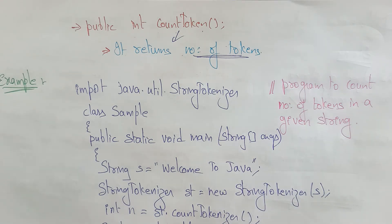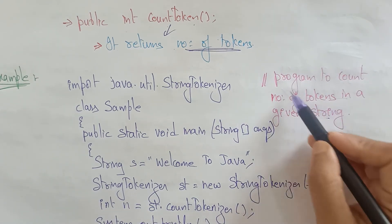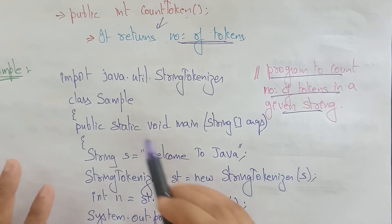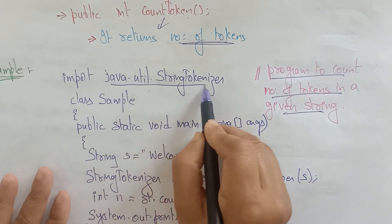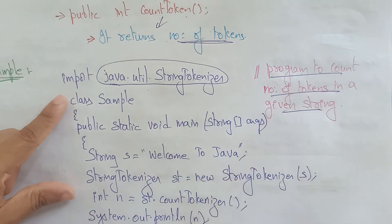So I entered 'javap java.util.StringTokenizer' and took only those three methods because whatever program I am explaining requires these three. Knowing the syntax allows me to apply it in the program. Now, writing the program: to count the number of tokens in a given string, first import the package — otherwise the compiler won't recognize hasMoreTokens, nextToken, or countTokens.